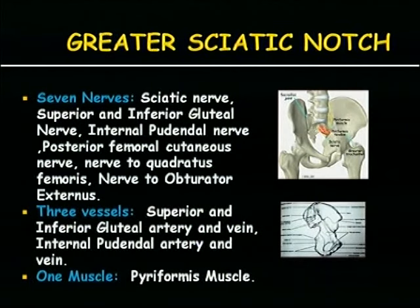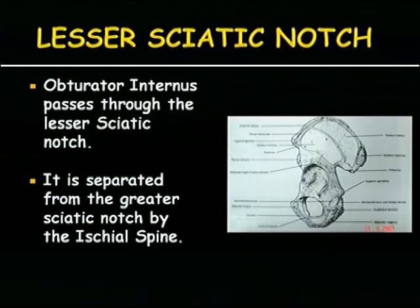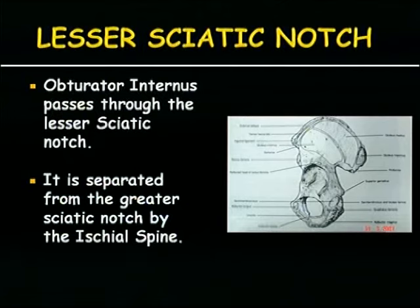Just before going to fracture pelvis, we should know that the pelvis has a lot of important structures around and within it. It has seven nerves, three big vessels, and muscles attached to the greater sciatic notch. The lesser sciatic notch is separated from the greater sciatic notch by the ischial spine, and the obturator internus comes out of it. The pelvis also has a true pelvis and false pelvis — the true pelvis contains the bladder, rectum, and uterus, while the false pelvis contains the abdominal viscera. Any injuries to this part can damage nerves, vessels, or important abdominal structures.